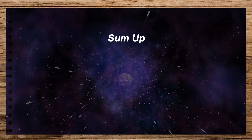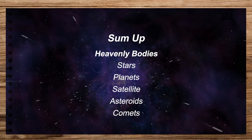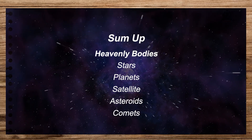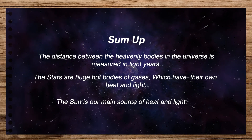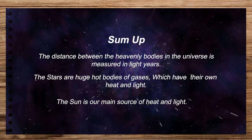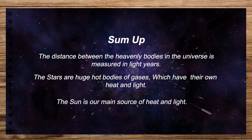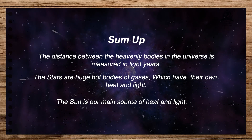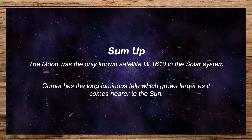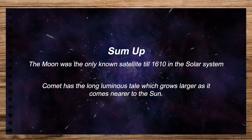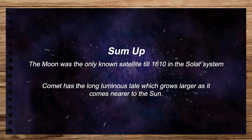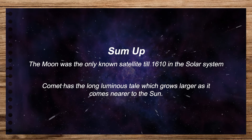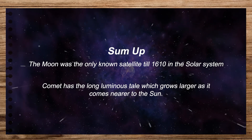Now let us see the sum up of the lesson. The heavenly bodies include stars, planets, satellites, asteroids, and comets. The distance between the heavenly bodies and the universe is measured in light years. The stars are huge hot bodies of gases which have their own heat and light. The Sun is our main source of heat and light. The moon was the only known satellite up to 1610 in the solar system. A comet has a long luminous tail which grows larger as it comes closer to the Sun. Hope you have understood today's lesson — that is all for today, thank you.